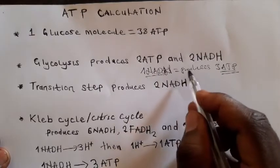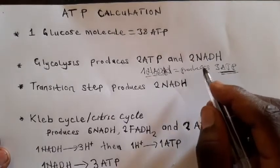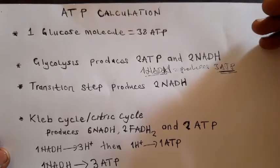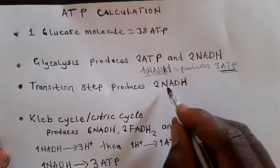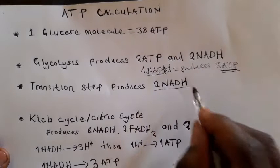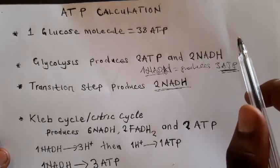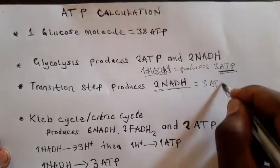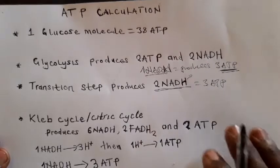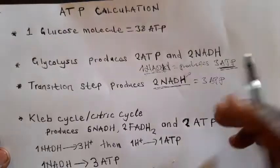Another step that produces NADH is the transition step. The transition step produces 2 NADH, and each NADH produces a maximum of 3 ATP when it donates protons. Another cycle which produces NADH is the Krebs cycle, also called the citric acid cycle.